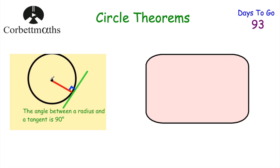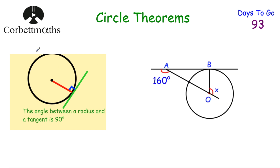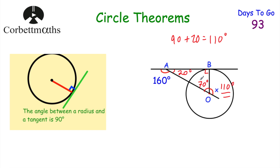Our next circle theorem: if you've got a radius and a tangent, the angle between them will always be 90 degrees — think of a bicycle wheel on the ground. In the example, the tangent and radius meet at 90 degrees. The two angles on the straight line add to 180, making the adjacent angle 20 degrees. Then 90 plus 20 equals 110, so the angle at the bottom is 70 degrees, and x on the straight line is 110 degrees.